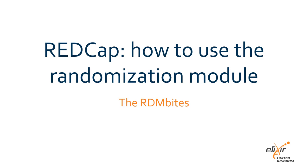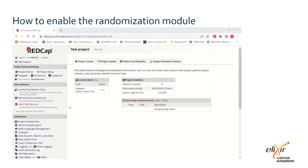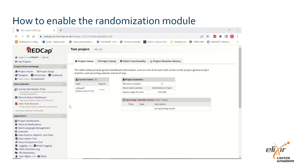Hi, I'm Saskia and I'll be talking about more advanced functionality in REDCap, which could help you when collecting data for research purposes such as clinical trials or longitudinal studies. In this video, I will show you how to use the randomisation module in REDCap. Randomisation is vital in clinical trials to ensure that any confounding variables will be evenly distributed among the intervention and control groups.